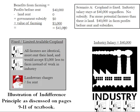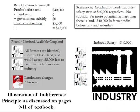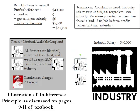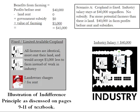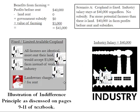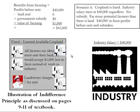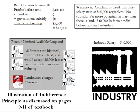This is not sustainable, because these people — all of whom would like to farm — have two choices: industry or farming. The benefits from farming are $45,000, while the benefits from working in industry are only $40,000, so everybody wants to farm. People start leaving the industry to go farm. But cropland is fixed, so if all these people move from industry and want to farm, there is no cropland available for them.